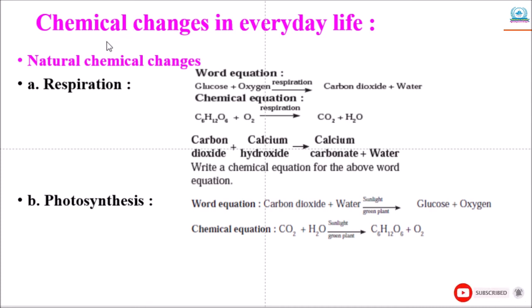First natural chemical change is respiration. Respiration is a continuously occurring biological process. In this process, we inhale the air and exhale carbon dioxide and water vapor. After an in-depth study, it is learned that glucose in the cell reacts with oxygen in the inhaled air to form carbon dioxide and water. The word equation of this chemical reaction is: glucose plus oxygen gives carbon dioxide and water.